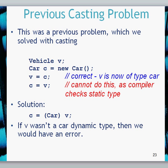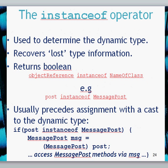However, if somehow V at runtime is not a car type, then we're going to have a problem and it will come back with an error message. The way we get around this is to use the instanceof operator. This is used to determine the actual dynamic type at runtime, and it returns a boolean — true or false — of whether that particular variable is of a certain type.